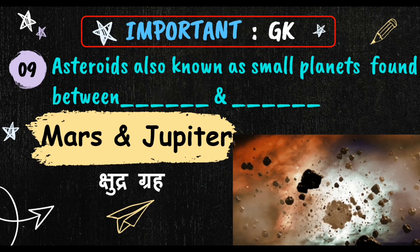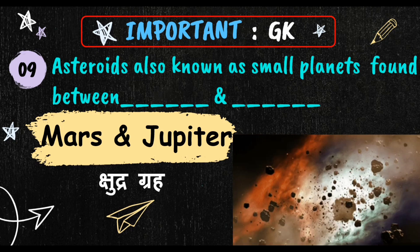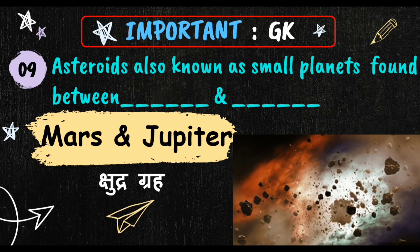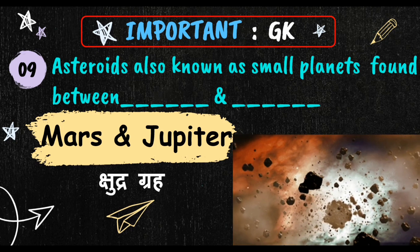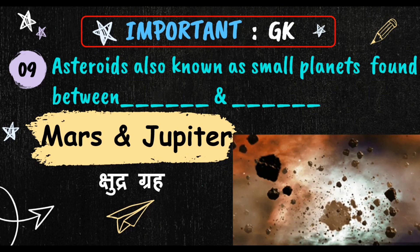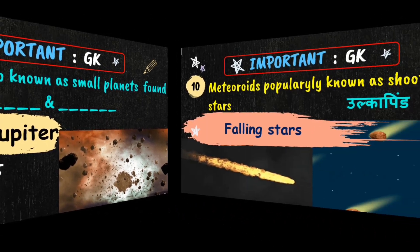Asteroids are also known as small planets that are found between Mars and Jupiter. In Hindi, they are called Shudra Graha.